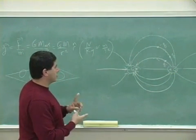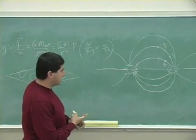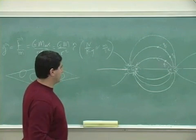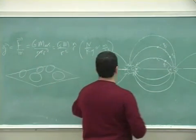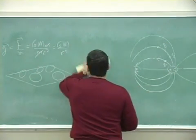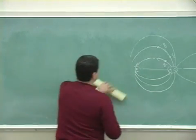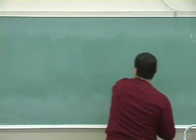So to summarize: field lines need to be symmetric, the number of lines needs to be proportional to charge, and they should never cross. Now let's practice with some examples.